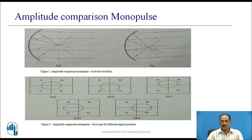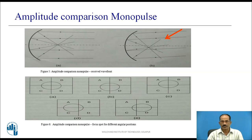In the case of amplitude comparison monopulse, the antenna uses four feeds placed symmetrically around the focal point. Figure 5a shows the wavefronts of the received signal for the satellite being on the antenna axis. Figure 5b shows the wavefronts of the received signal for the satellite being off the antenna axis. When the satellite is on the antenna axis, the wavefront will be focused onto a spot on the antenna axis, as shown in Figure 6a. For an off-axis location of the satellite, the focus spot will also be off the antenna axis, as shown in Figure 6b.